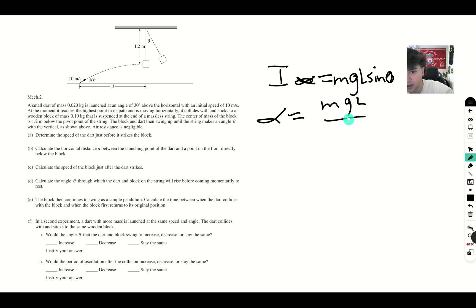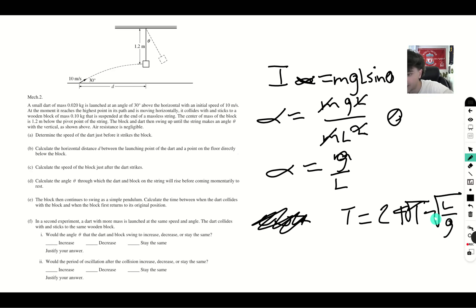I alpha equals MGL sine theta. From here, alpha equals MGL over ML squared. We can assume that sine theta is just theta. So alpha is going to be G over L. Our period is going to be T equals 2 pi root L over G. And our period is the time for one revolution, but we only want it for half a revolution. It's just going to be pi times root L over G. And our L is 1.2, our G is 10. So we'll get root 0.12 times pi is the time that it's going to take.